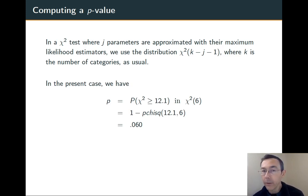So that leaves us in chi-squared of six. We need the probability of getting a chi-squared value at least that extreme, just through random chance, in chi-squared of six. So in R, the code is one minus pchisq 12.1 comma 6, and we get 0.060.